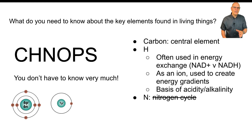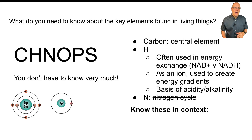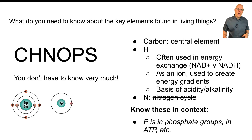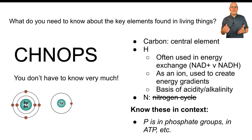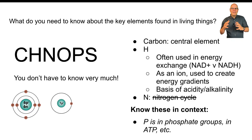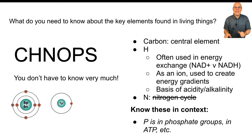The nitrogen cycle is no longer on the AP Bio exam, so you don't need to know about it. But the main thing is to know about these atoms in context. Phosphorus is in phosphate groups, which is found in ATP. That's the kind of interconnected, cross-topic knowledge that you want to have for success in AP Bio.